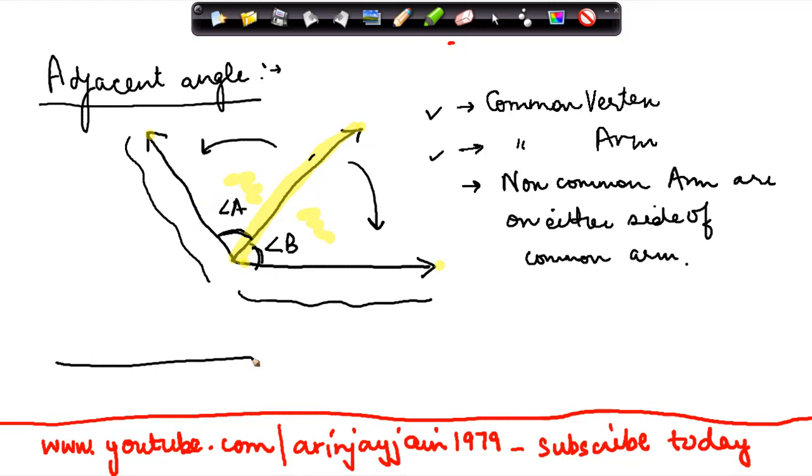Similarly, if I had a situation where I have angles M and N, again there is a non-common arm, there is a common arm, and the non-common arms are on either sides. Therefore again, these two angles are adjacent to each other.